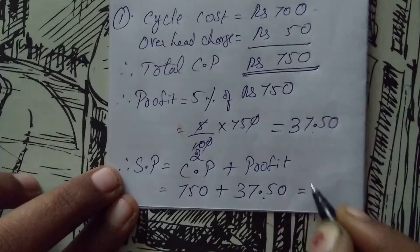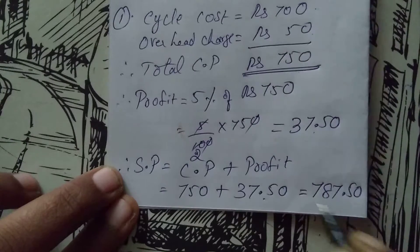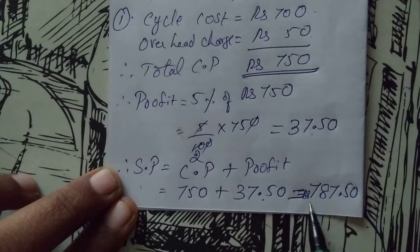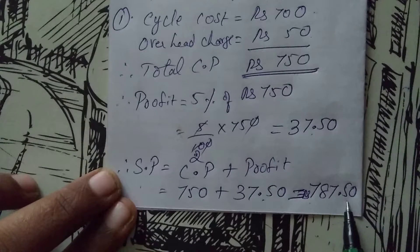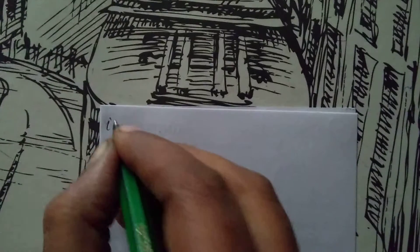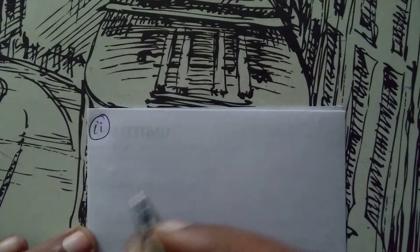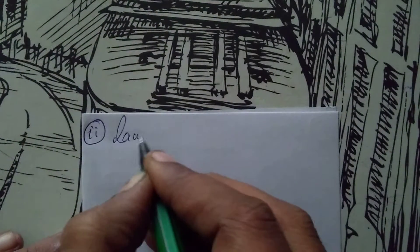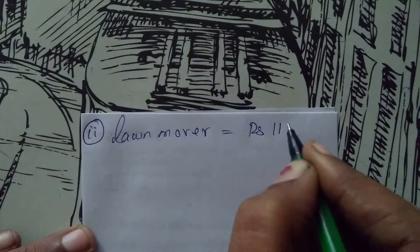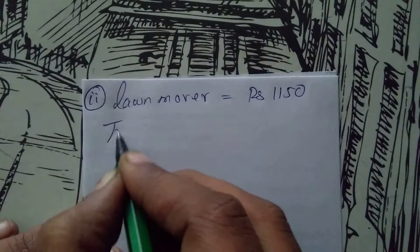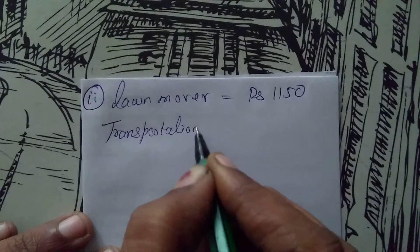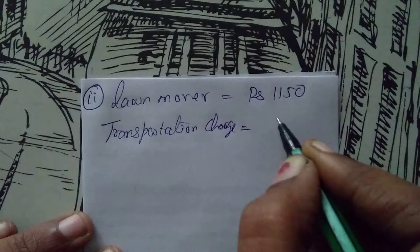What should be the selling price? Selling price equals cost price plus profit. Cost price is rupees 750, profit is rupees 37.50 — 5% of 750. When we add we get rupees 787.50. So the total selling price is 787.50. In the similar way we will do the second sum also.